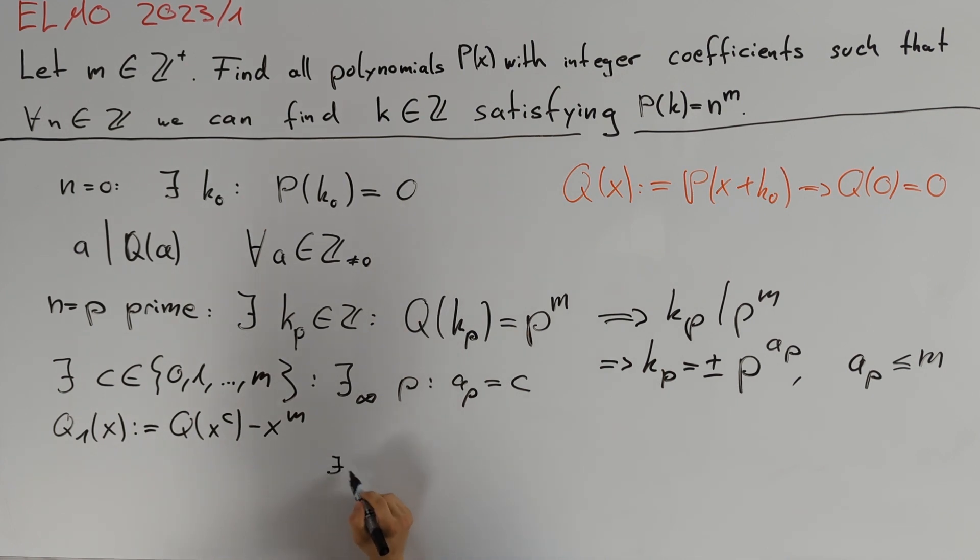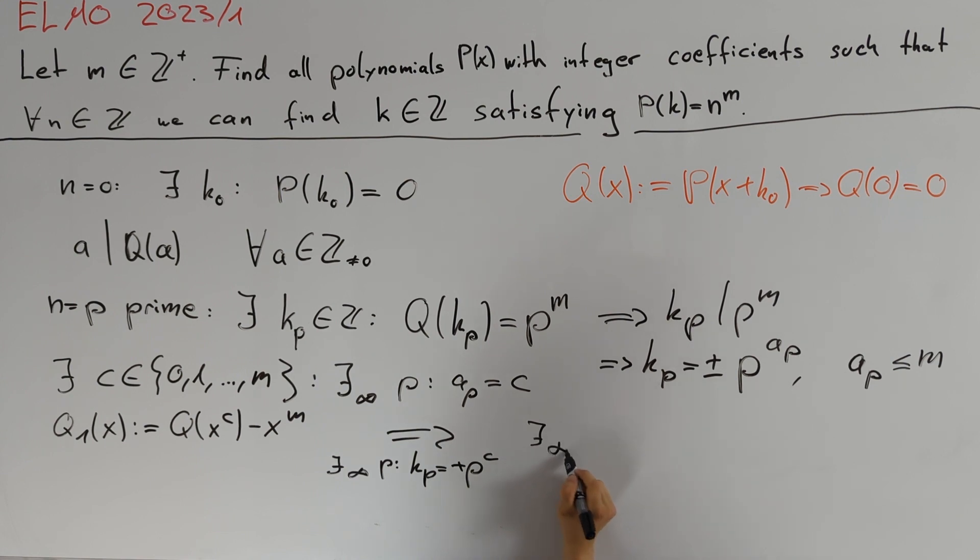If we are in the case that there exists infinitely many primes p such that kₚ equals plus p to the power of c, we get that there are infinitely many primes p such that Q₁(p) equals zero.